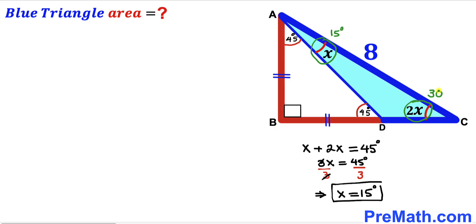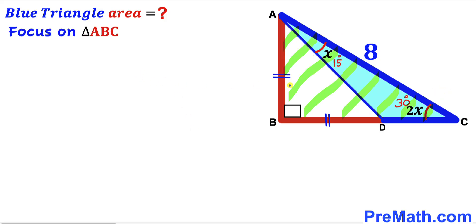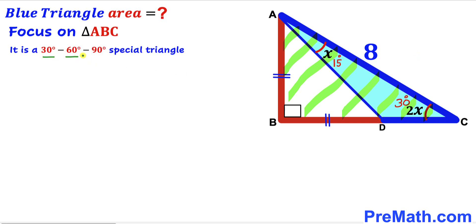Now let's focus on the big right triangle ABC. We can see this is a special 30-60-90 triangle, since one angle is 30 degrees, another is 90 degrees, and therefore the third must be 60 degrees.